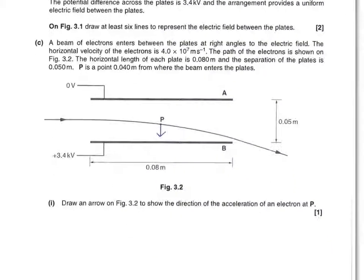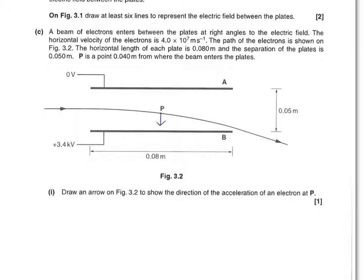In the next part of the question, we consider an electron passing between these two parallel plates. And we're first asked to consider the direction of the acceleration of the electron. This will be in the same direction as the direction of the force and the electron would be attracted towards the positive plate. Now, before moving on, look at the other data that you have been given. We have the original horizontal velocity of electrons entering the field. We also have the horizontal length of each plate and the separation of the plates. We're also told that the point P is midway along the length of the plate.